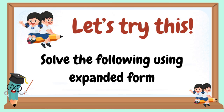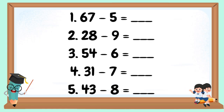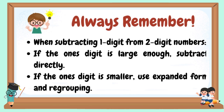Let's try this. Solve the following using expanded form. Always remember: when subtracting one digit from two-digit numbers, if the one's digit is large enough, subtract directly. If the one's digit is smaller, use expanded form and regrouping.